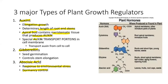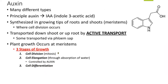Auxin can travel short distances from cell to cell via active transport or diffusion, or through the phloem for long-distance transport. The principal auxin is indole-3-acetic acid (IAA), though you can simply refer to it as auxin. It is synthesized in the growing tips of roots and shoots, known as meristems — the parts where cell division occurs.